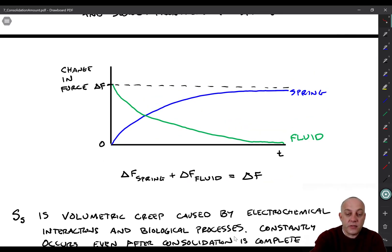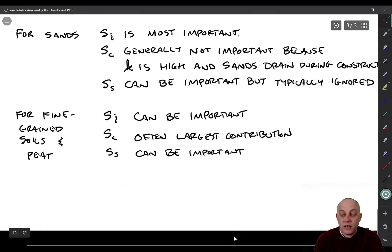So here's what it looks like. You've got change in force on the y-axis versus time on the x-axis. Slowly over time the spring load will increase and then it will asymptotically approach delta F as time goes to infinity. And similarly the fluid, the fluid force, the force taken by the fluid will decrease by a proportional amount, such that the change in force in the spring plus the change in force in the fluid is always equal to the change in applied force delta F.